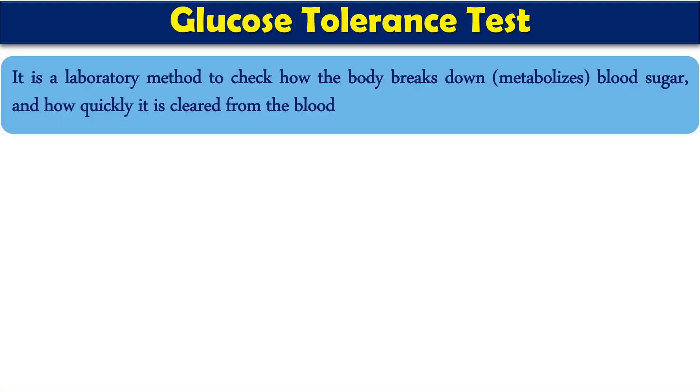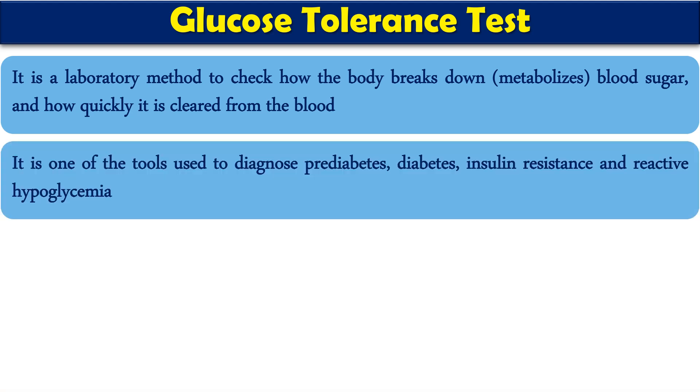Glucose tolerance normally decreases in certain specific situations, like in the case of diabetes mellitus, impaired glucose tolerance, and endocrine disorders such as hyperthyroidism, hyper-pituitarism, or hyperadrenalinism. In these cases, the body is unable to utilize glucose properly. This is basically a laboratory test to check how your body breaks down, utilizes, or metabolizes blood glucose and how quickly it clears the extra glucose burden from the blood circulation.